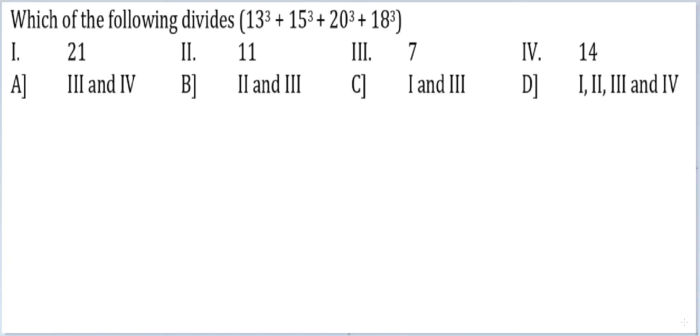Let's look at this question: which of the following divides 13³ + 15³ + 20³ + 18³? Then you have four numbers. For 21, you would have to check with 3 and 7.